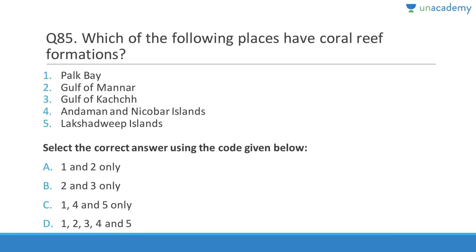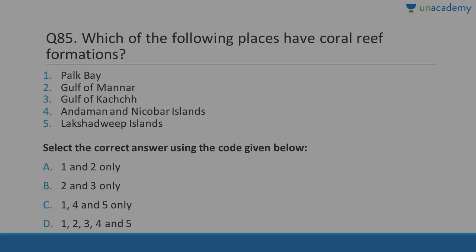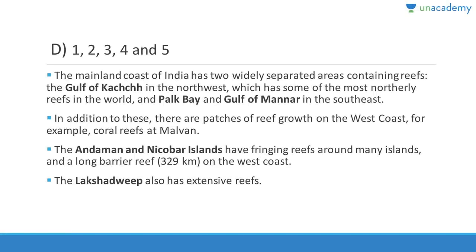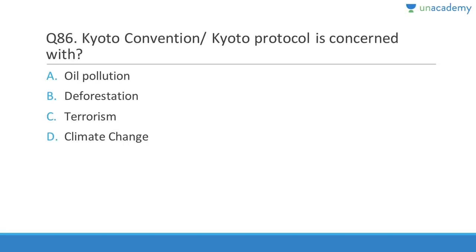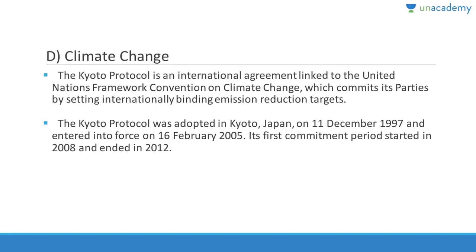Question 85: Which of the following places have coral reef formations — Palk Bay, Gulf of Mannar, Gulf of Kutch, Andaman and Nicobar Islands, Lakshadweep Islands? Answer is all five — 1, 2, 3, 4, and 5. All of these have coral reef formations of different types.